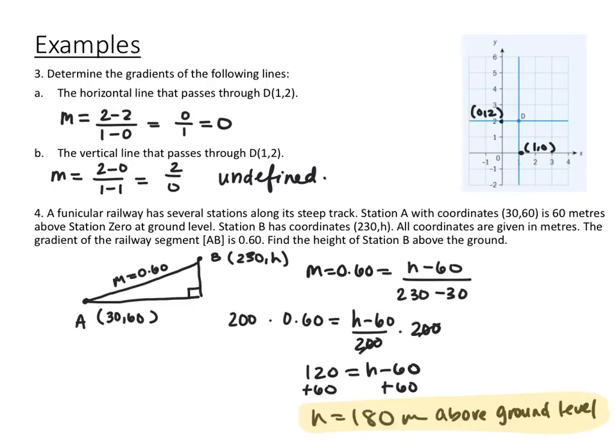I set up a little triangle here. We have point A at 30, 60, point B at 230, h. And we know our slope is 0.60. So I set our slope that we know, 0.60, equal to the slope formula. I did h minus 60 over 230 minus 30. Simplified 230 minus 30, got 200. Multiplied both sides by 200 to cancel off the 200s in the denominator. So you end up with 120 is equal to h minus 60. Then I added 60 to both sides and got the height for B to be 180 meters above ground level.